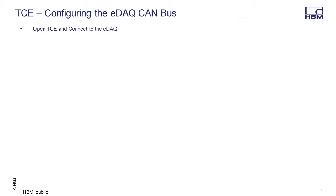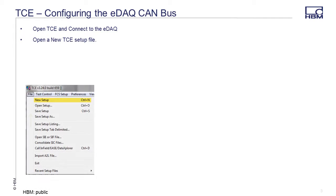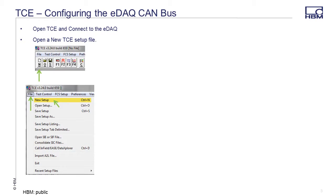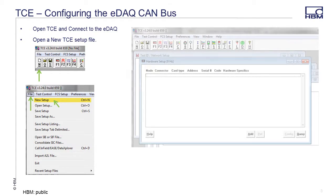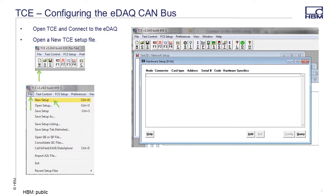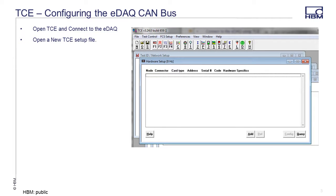To configure the EDAC CAN port, open TCE and connect to the EDAC. Open a new TCE setup by selecting the File menu and then select New Setup, or select the End button in the TCE toolbar. Click on the F1 key on the TCE toolbar or press keyboard function key F1 to open the hardware setup window. Next, query the EDAC hardware by selecting the Query button.